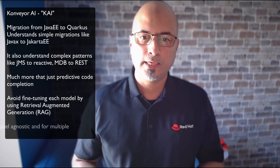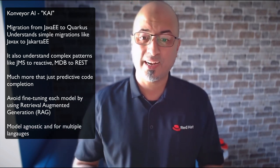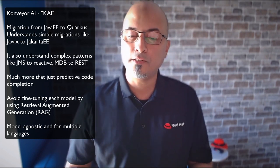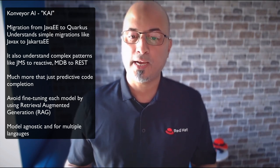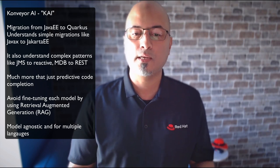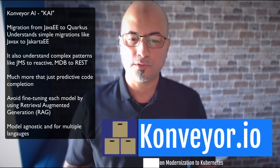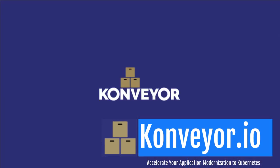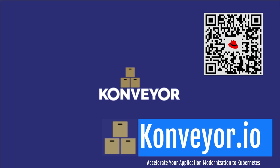That was an interesting demo — an end-to-end use case showcasing migration from Java EE to Quarkus. We took the CoolStore application, converted it to a Quarkus application, and deployed it onto OpenShift, ensuring developers in their inner loop can use this. Kai understands simple migrations like JavaX to Jakarta EE, JMS to Reactive, MDB, and REST. It is more than just predictive code completion — it understands through inference, static code analysis, and the RAG approach to contextualize information for large language models. Finally, it is model agnostic, so you can run multiple languages and generate code as needed. For more information, visit the website or the Red Hat Developers page.